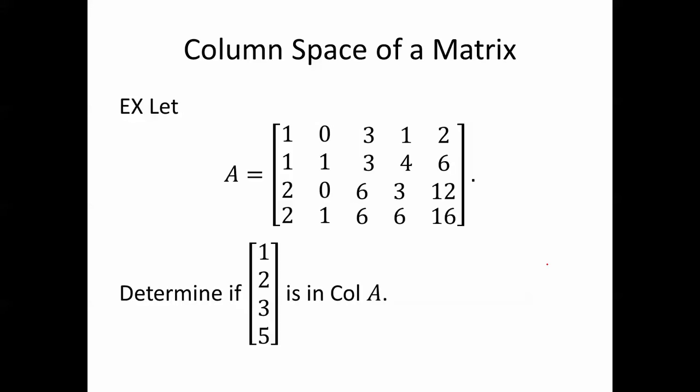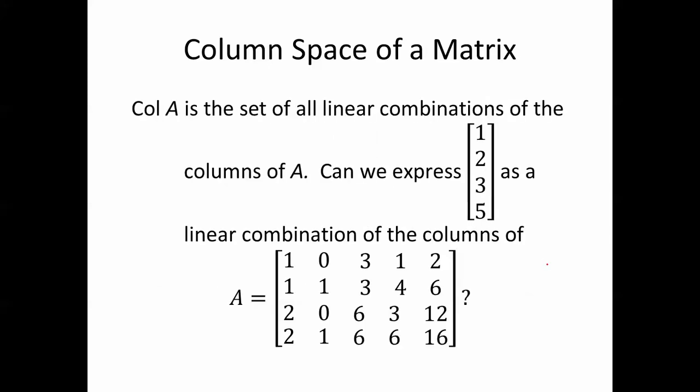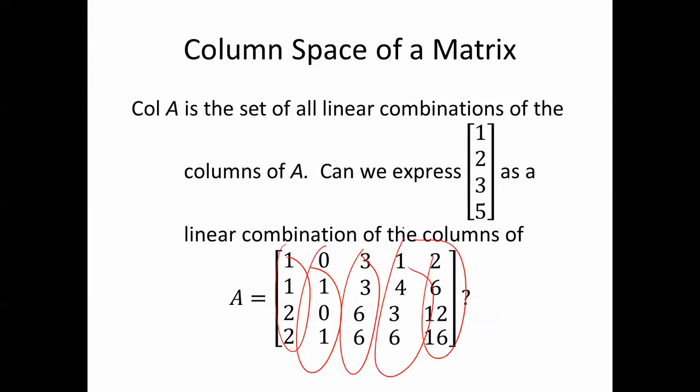So for example, let A equal this matrix. Determine if the vector (1, 2, 3, 5) is in the column space of A. The column space of A is the set of all linear combinations of the columns of A — can we express (1, 2, 3, 5) as a linear combination of the columns of A? Let's find out.